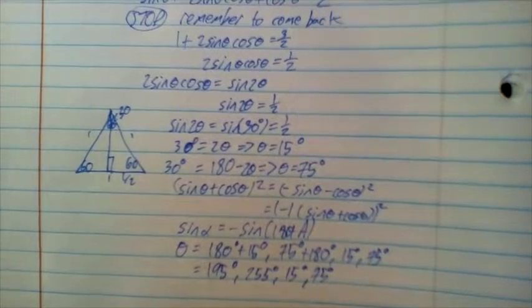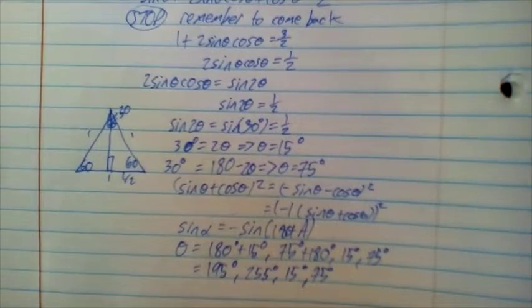So, we have the answer that theta is equal to four different degree values: 195, 255, 15, and 75.